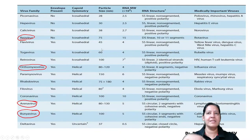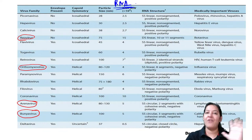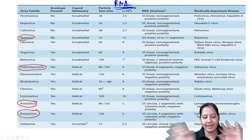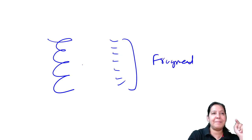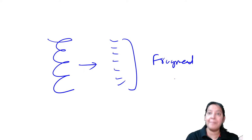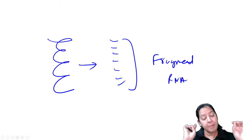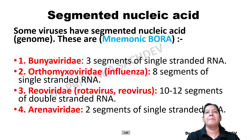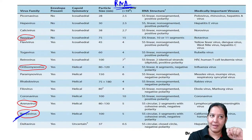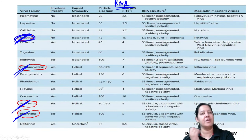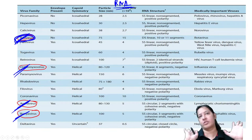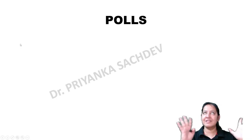One more important topic about the nucleic acid of RNA viruses: among all 14 RNA viruses, four have segmented or fragmented RNA. The RNA is single-stranded usually but it is fragmented in pieces in some of them. Which of them have fragmented RNA? The mnemonic is BORA - B-O-R-A. These four all have segmented RNA.